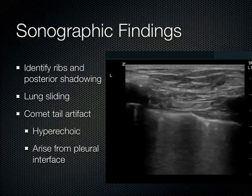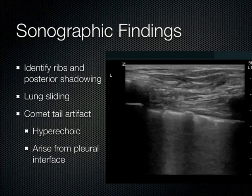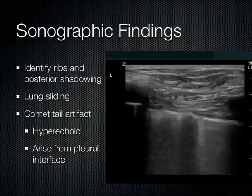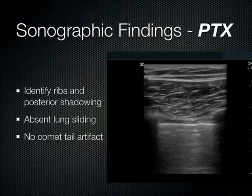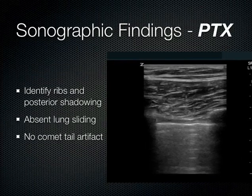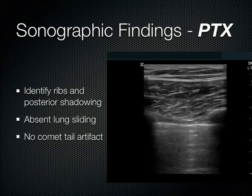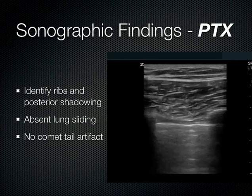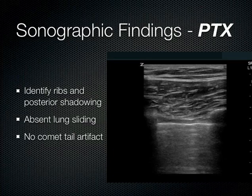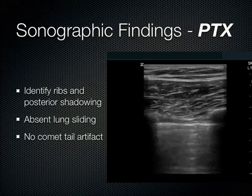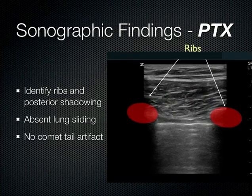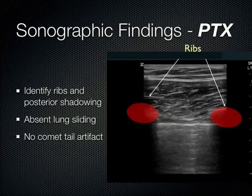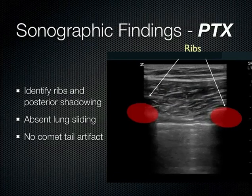In pneumothorax, the patient is still breathing, so you see some movement of the chest wall from the intercostal muscles contracting. But as for sliding — you don't see anything. Sliding has been described as marching ants or shimmering. If you don't see that effect, you have to be concerned that the lung is not touching the chest wall. You can also appreciate there's no comet tail there, and there may even be a hint of an A-line at the bottom of the screen.